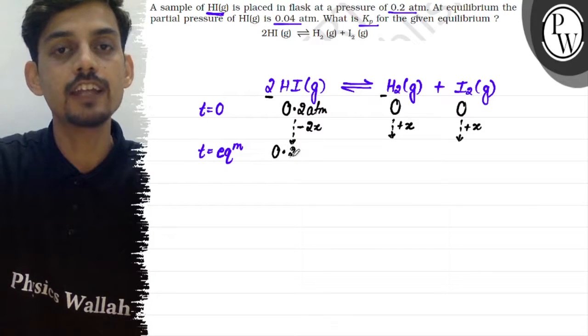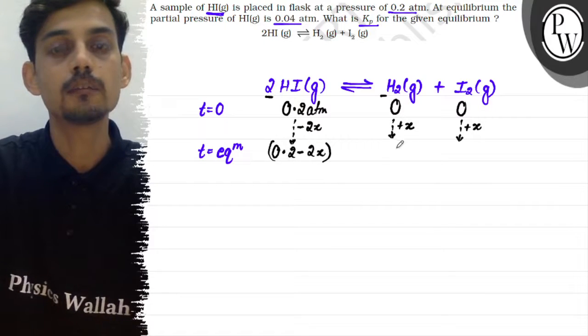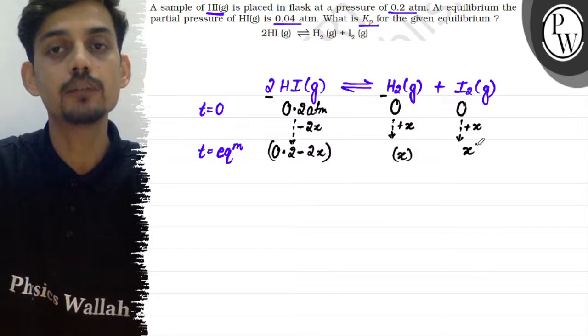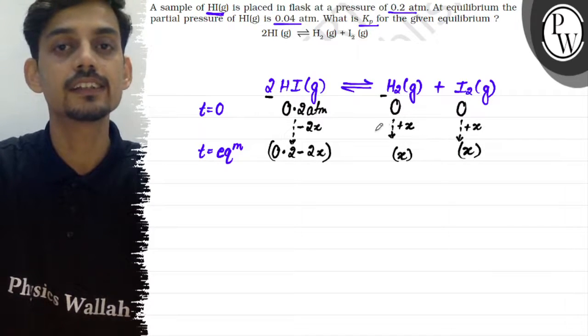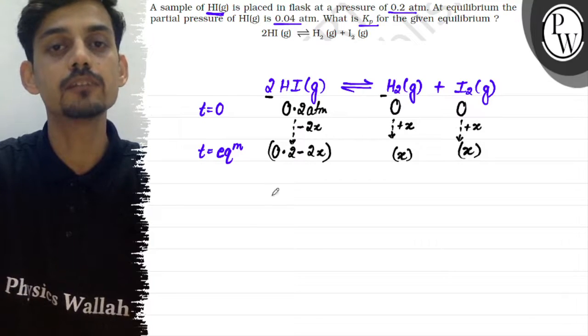So the remaining pressure of HI at equilibrium will be 0.2 minus 2x. The pressure of H2 at equilibrium will be 0 plus x, and the pressure of I2 at equilibrium will be 0 plus x. We have assumed the pressures in terms of x.